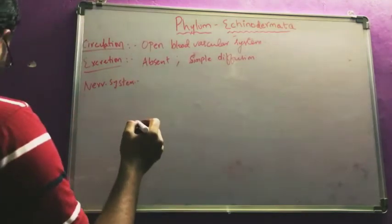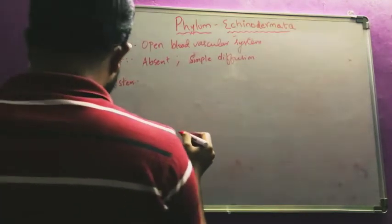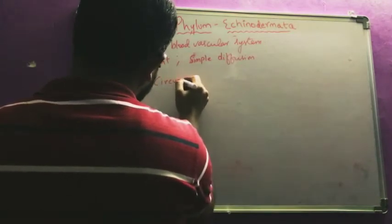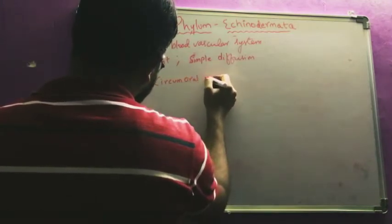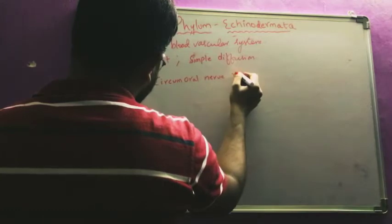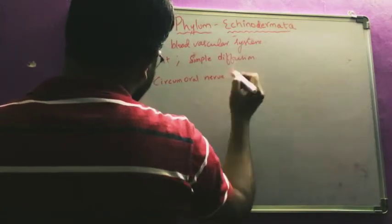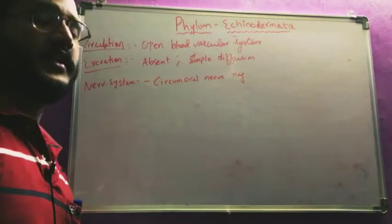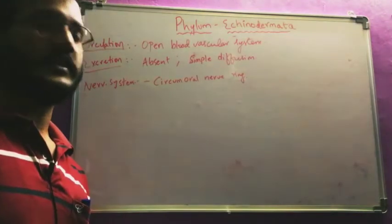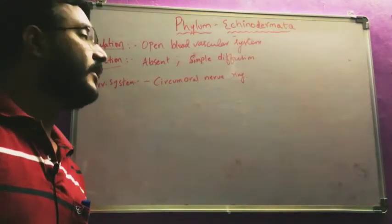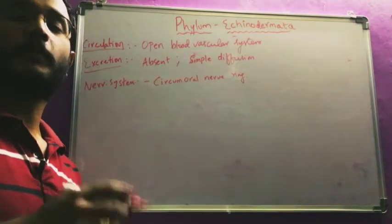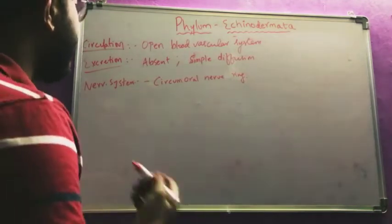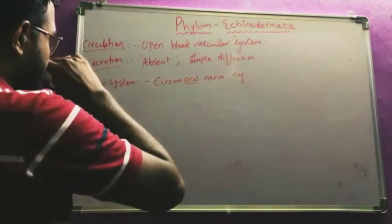The nervous system here is the circum oral nerve ring. We have seen circum pharyngeal and circum esophageal nerve rings in other phyla, but here the nerve ring surrounds the entire mouth region, so it is known as the circum oral nerve ring.